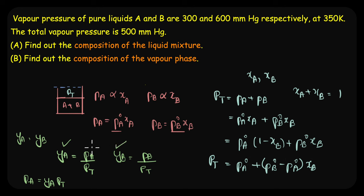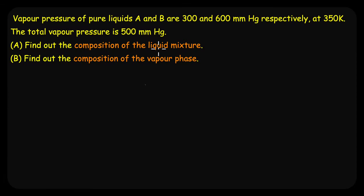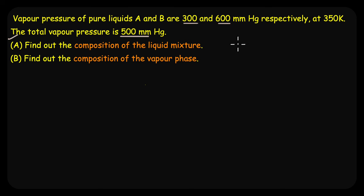So that's the recap of Raoult's Law — let's now jump directly to the question. We are given vapor pressure of pure liquids A and B as 300 and 600 mmHg respectively, and the total vapor pressure of the liquid mixture is 500 mmHg. Let's find the composition of the liquid mixture.